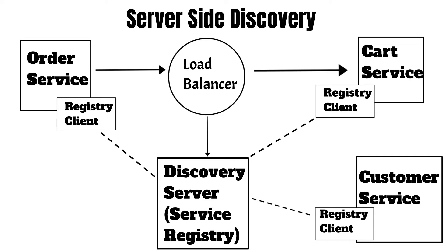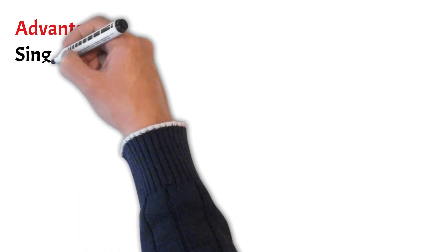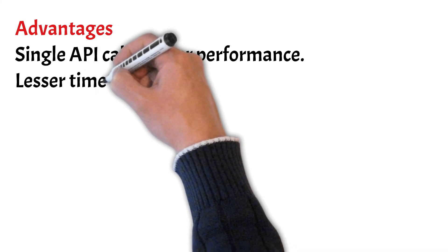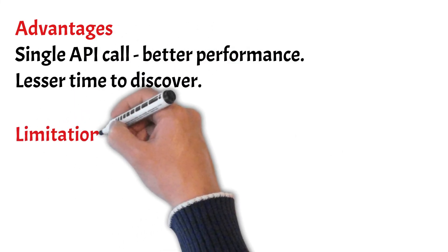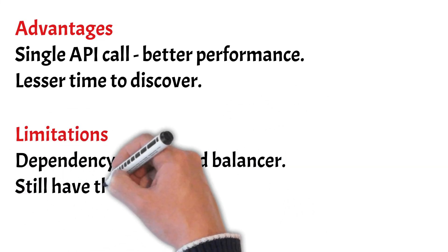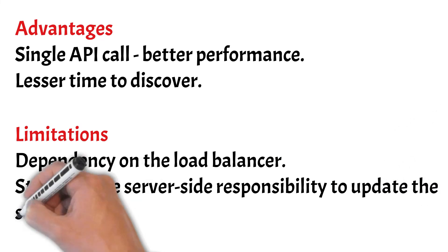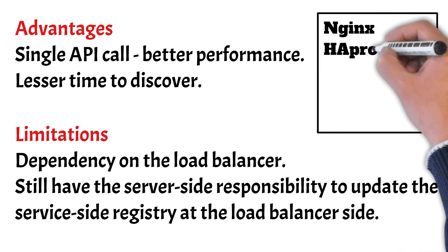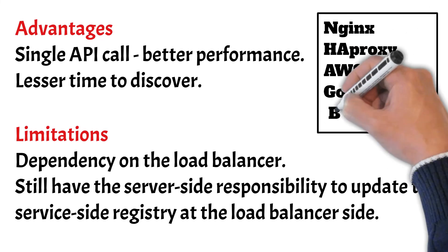The difference from client-side discovery is that the calling service — the order service — doesn't get to know the IP address of the card service, whereas in client-side discovery, the order service knew the address of the card service after the first call. The advantage of server-side discovery is that it is a single API call, giving better performance and faster service discovery. The limitations are that it is dependent upon the load balancer, and there is still the responsibility to update the service registry at the load balancer. Examples include Nginx by Netflix, HAProxy, AWS ELB (Elastic Load Balancer), and the Google Load Balancer.